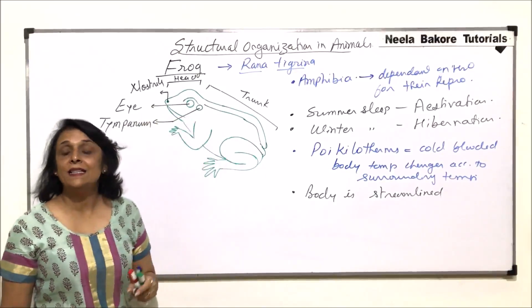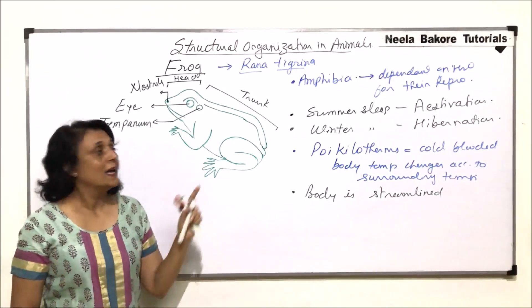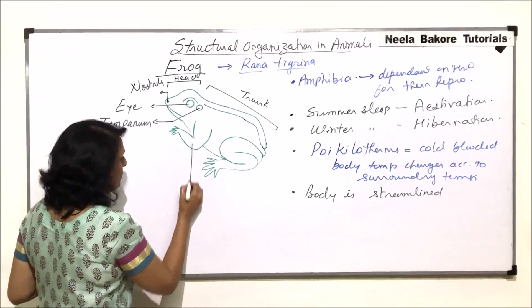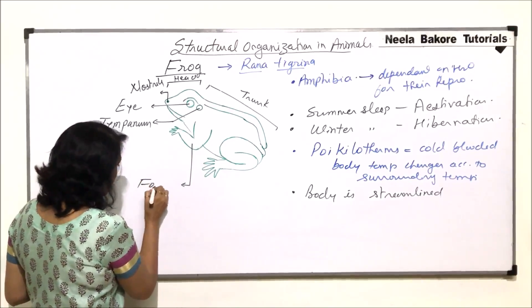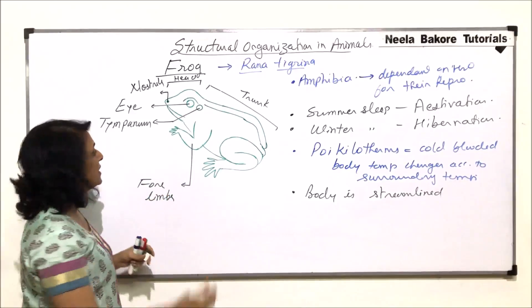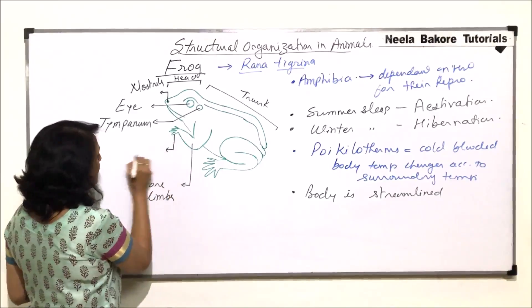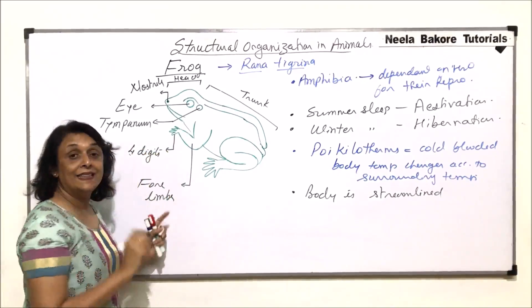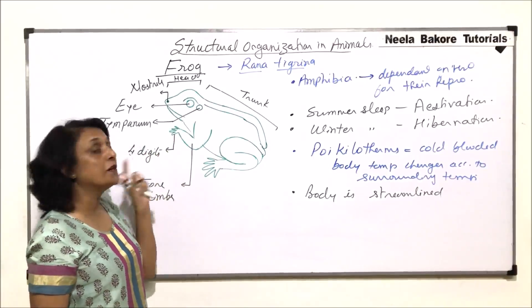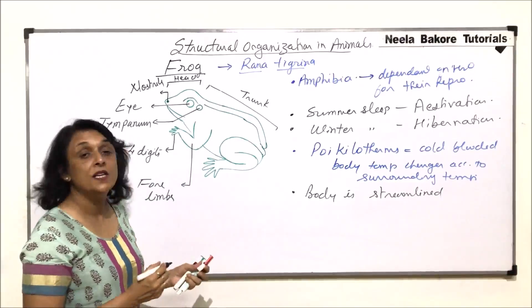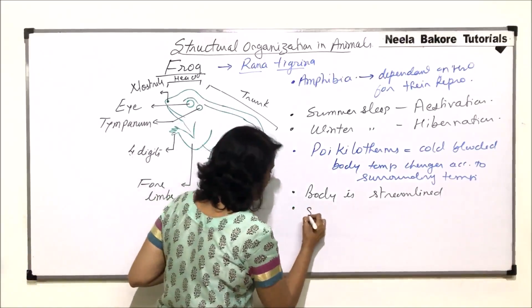The body, that is the trunk part, has legs, the forelimbs and the hind limbs. Now these forelimbs have four digits. So here we have drawn four digits. And in case of males and females, there is a difference here. That means frogs also show sexual dimorphism.